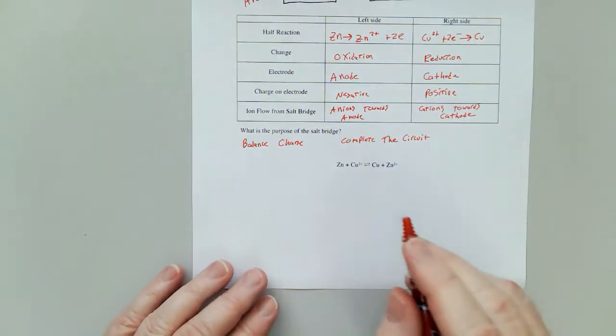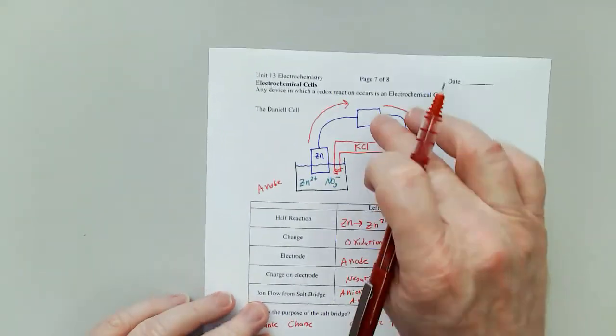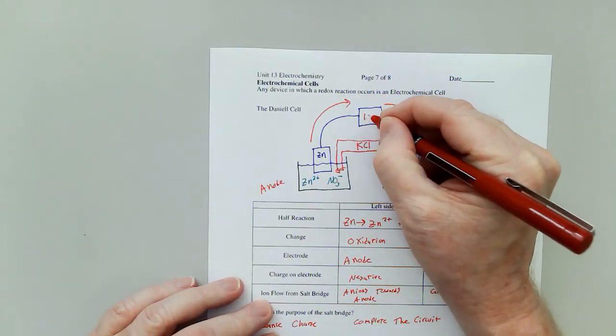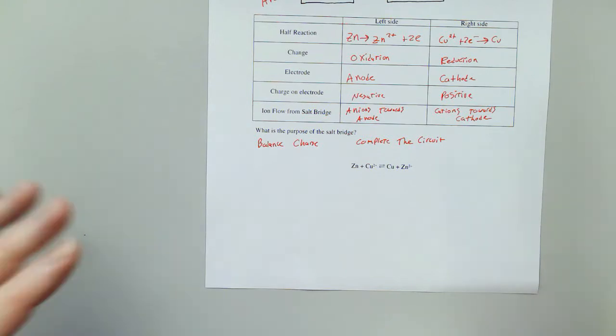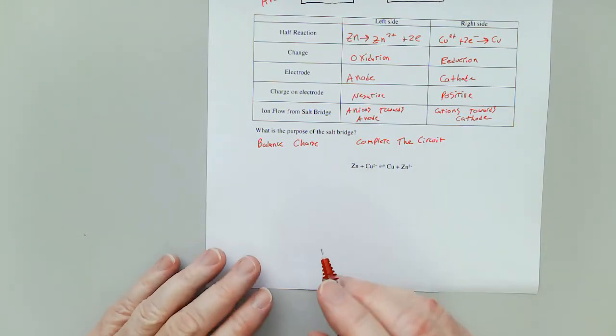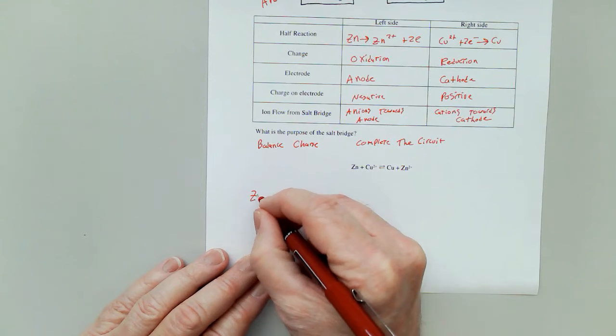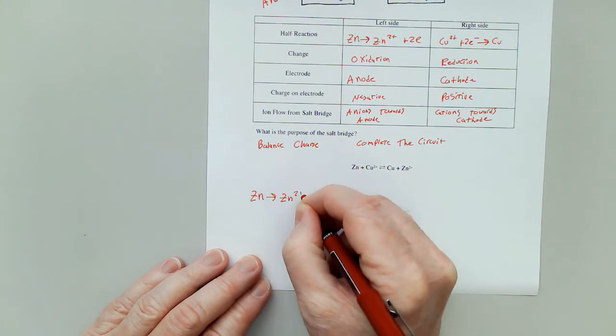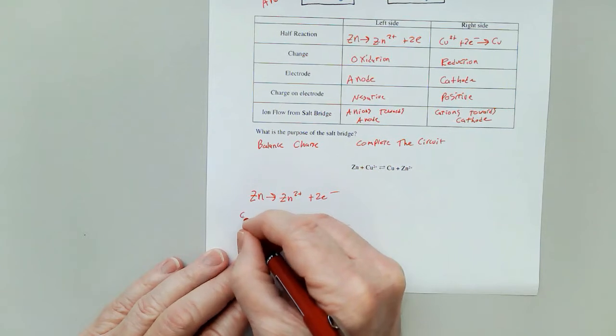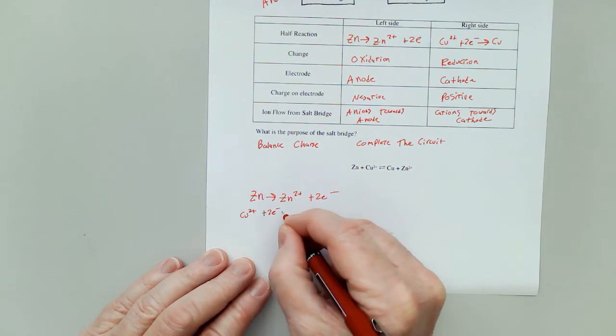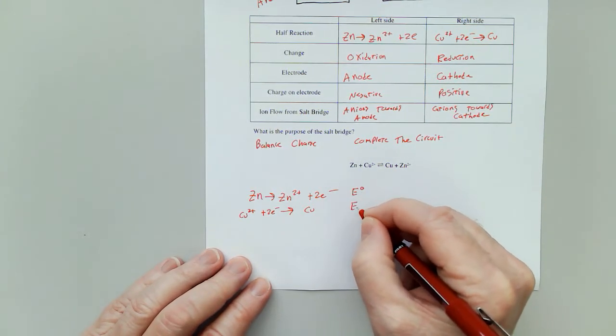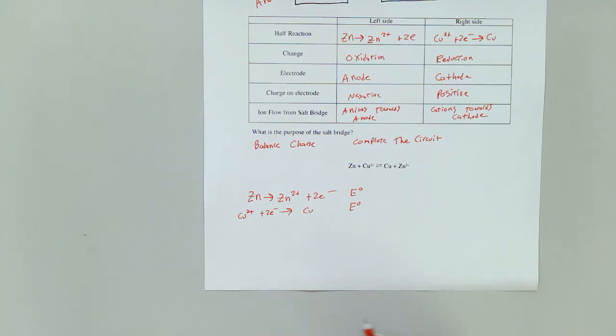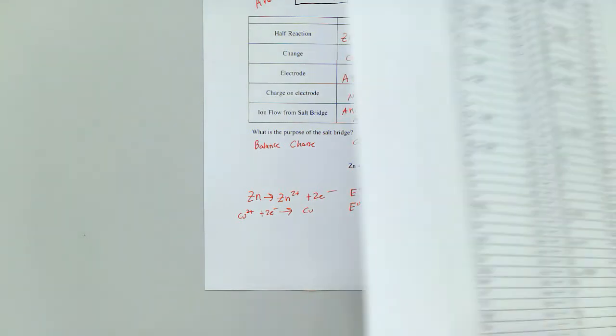Okay, now how do we get the reading up here? Turns out for this reaction it's going to say 1.10 volts as long as everything's 25 degrees Celsius and 1 molar concentrations, et cetera. Well let's break down the two half reactions. We know that zinc is going to turn into zinc 2 plus plus two electrons, and copper 2 plus plus two electrons is going to turn into copper.